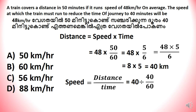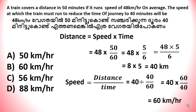That is 40 into 60 divided by 40. The 40s cancel out. That is 60 km per hour.